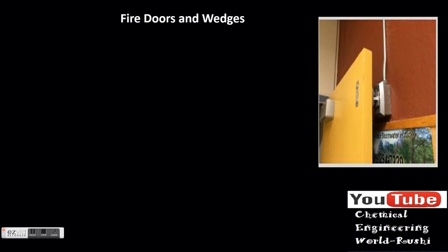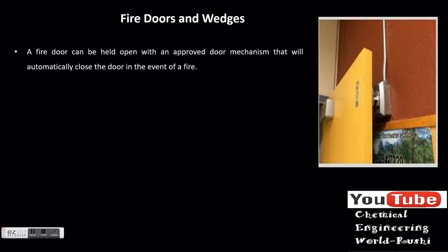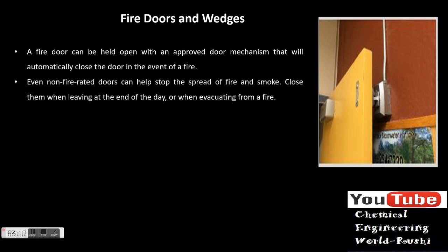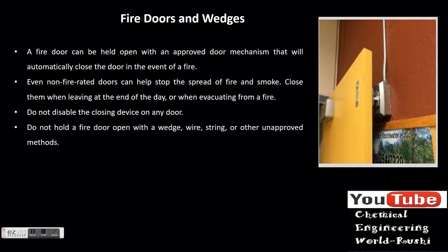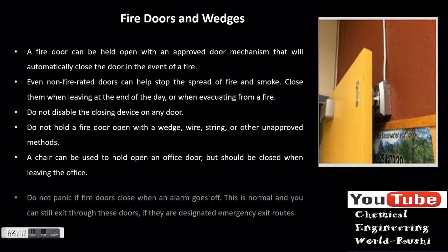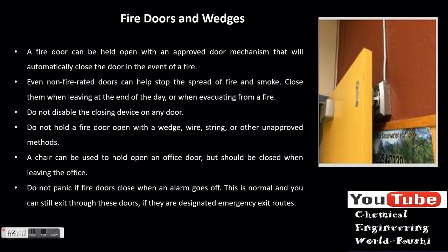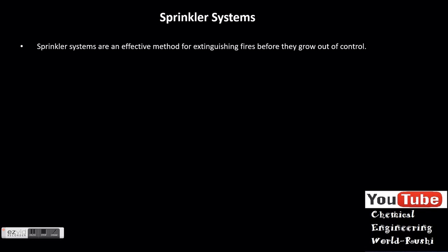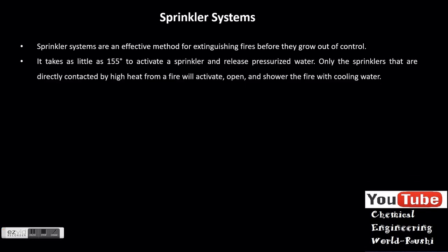Fire doors and wedges: if used properly, fire doors contain fires and protect exit passages. They can be identified by a rating plate or the presence of a closing device, and can be held open with an approved mechanism that automatically closes in the event of a fire. Never place objects in the swing of a fire door. Close doors when leaving or evacuating. Do not disable the closing device or hold a fire door open with a wedge, wire, string, or other unapproved methods. Do not panic if fire doors close when an alarm goes off — you can still exit through them if they are designated emergency exit routes.